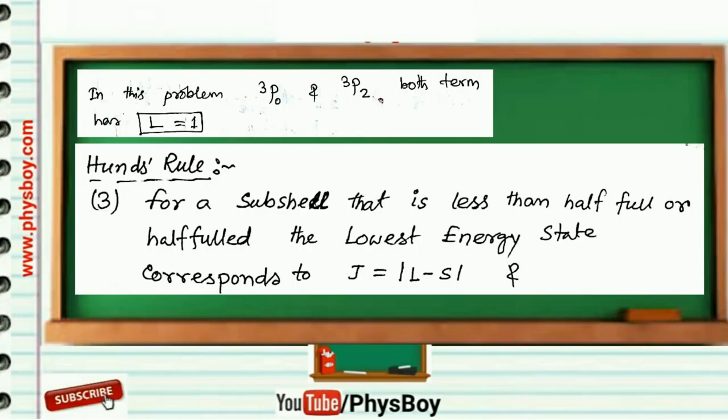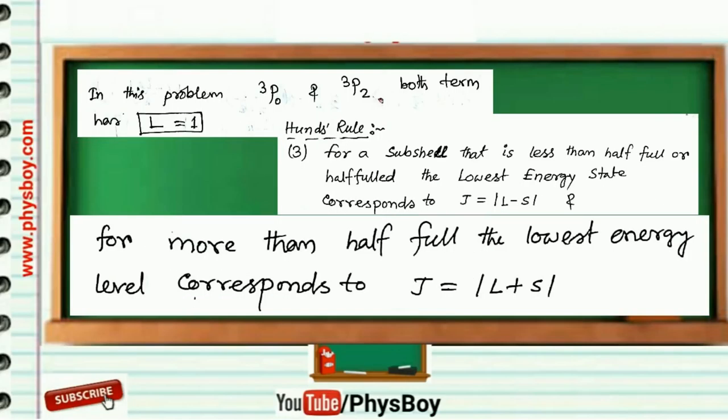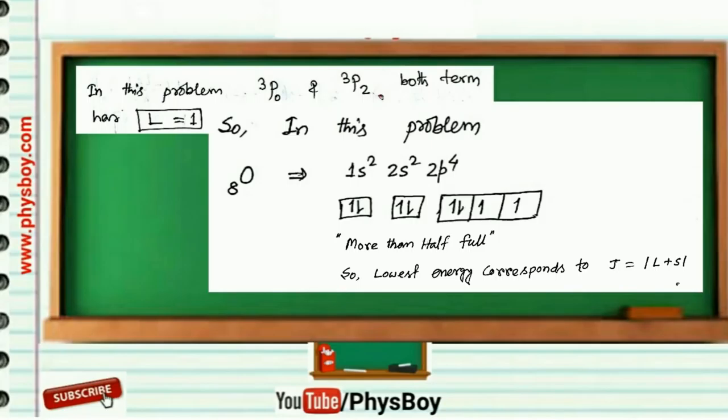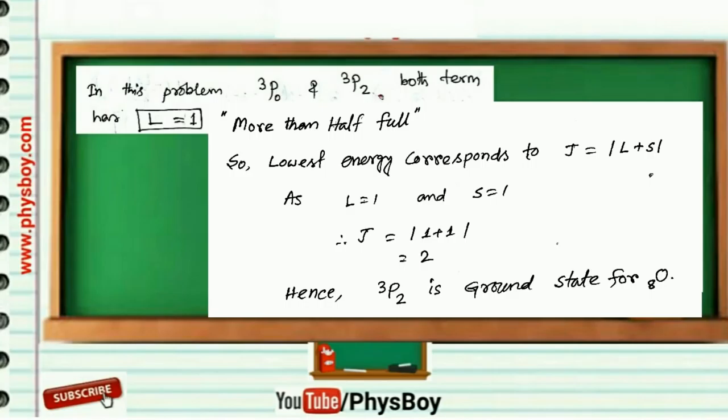And for more than half full, the lowest energy level corresponds to J equals L plus S. Oxygen has more than half full orbitals, so lowest energy corresponds to J equals modulus of L plus S.